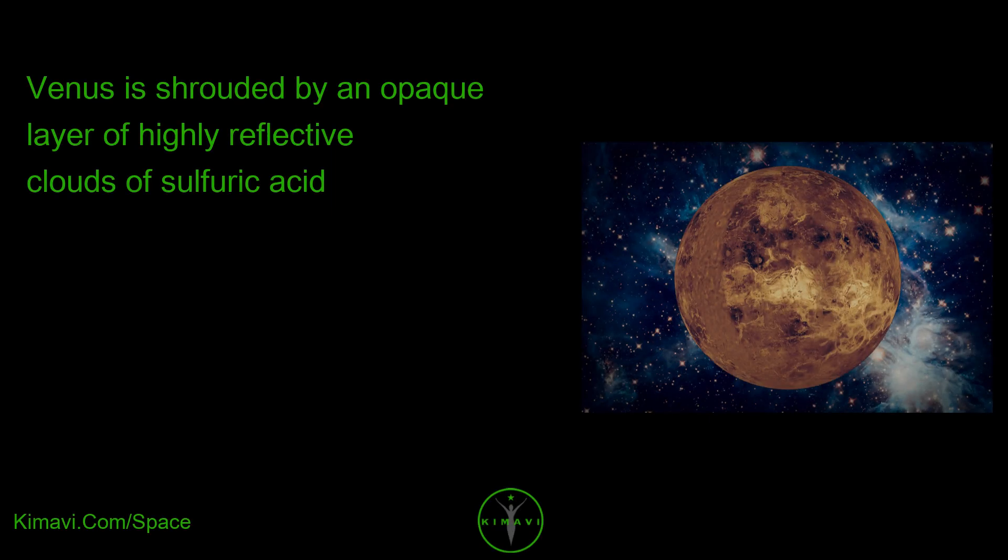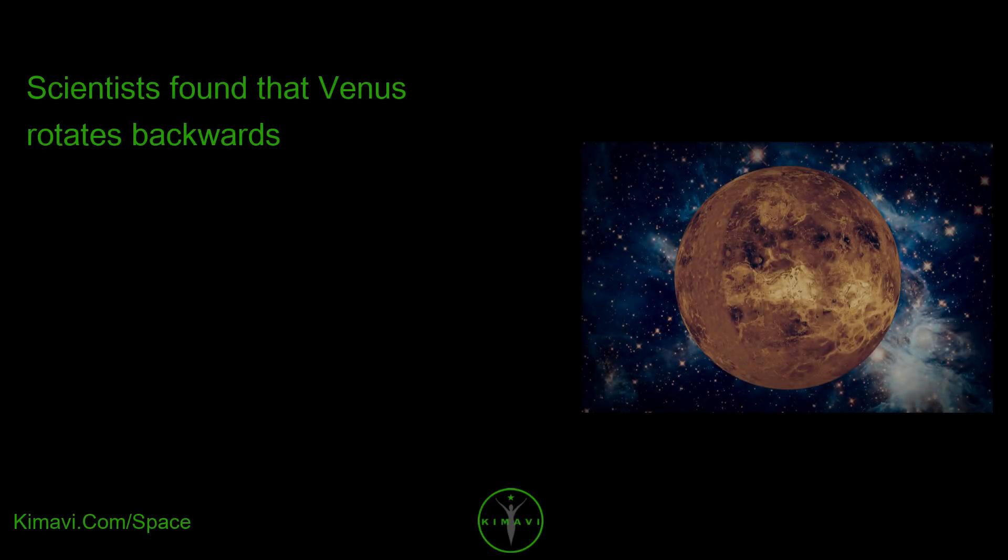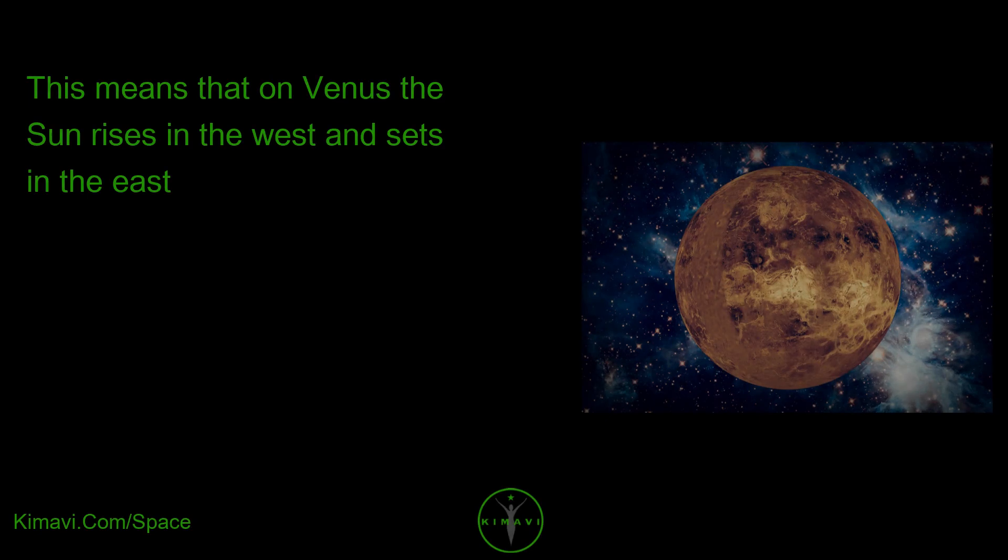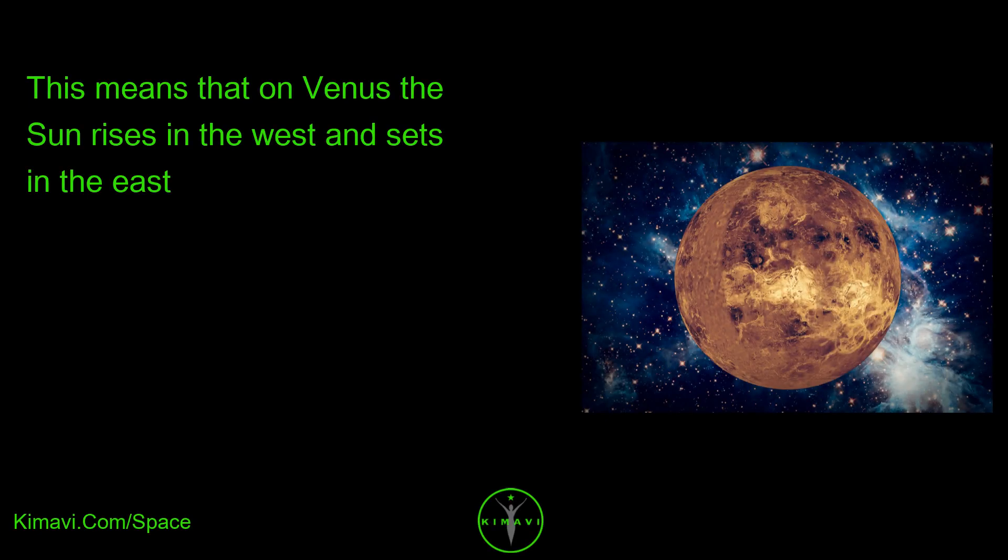Venus is shrouded by an opaque layer of highly reflective clouds of sulfuric acid. Scientists found that Venus rotates backwards. This means that on Venus the Sun rises in the west and sets in the east.